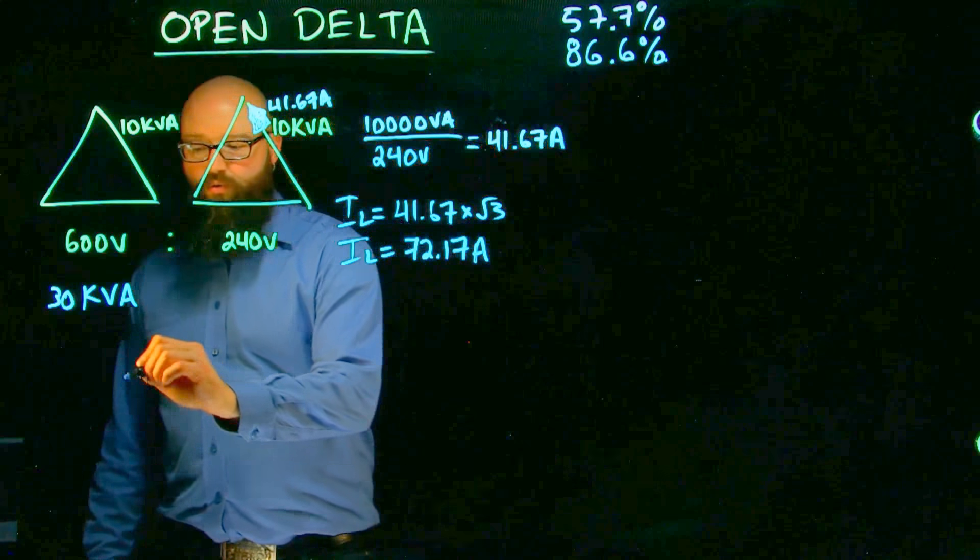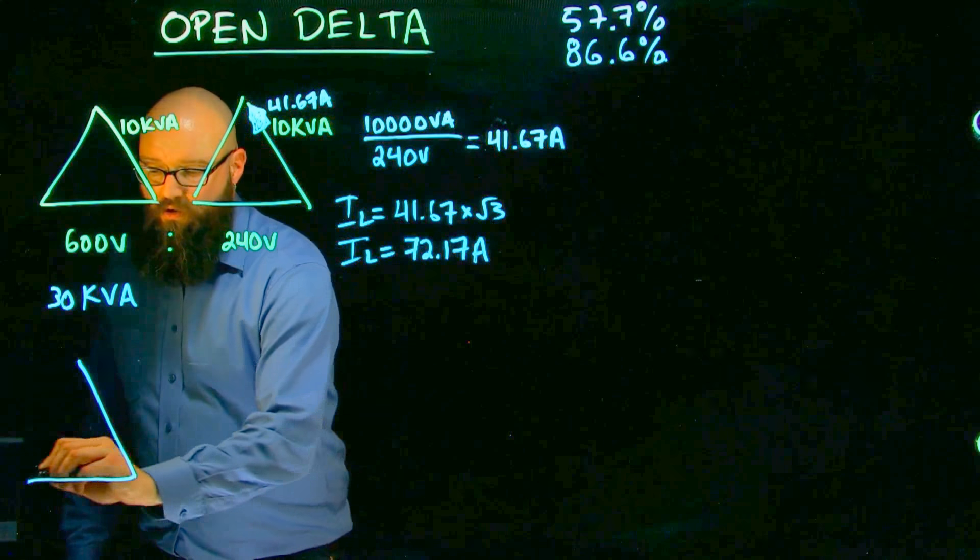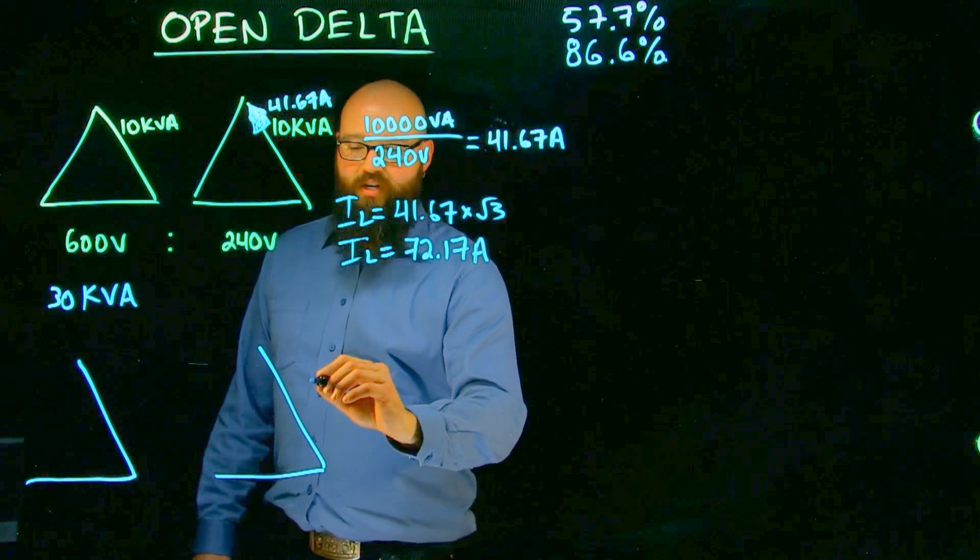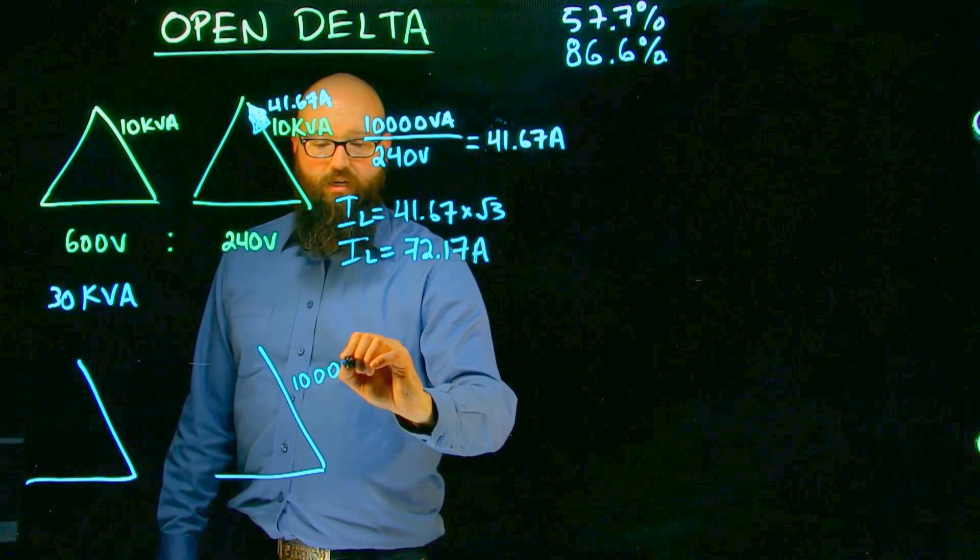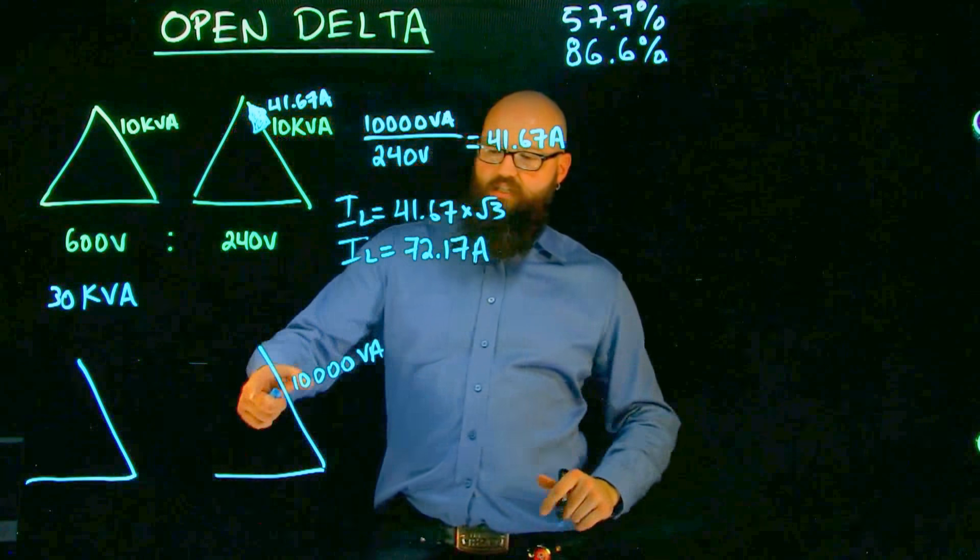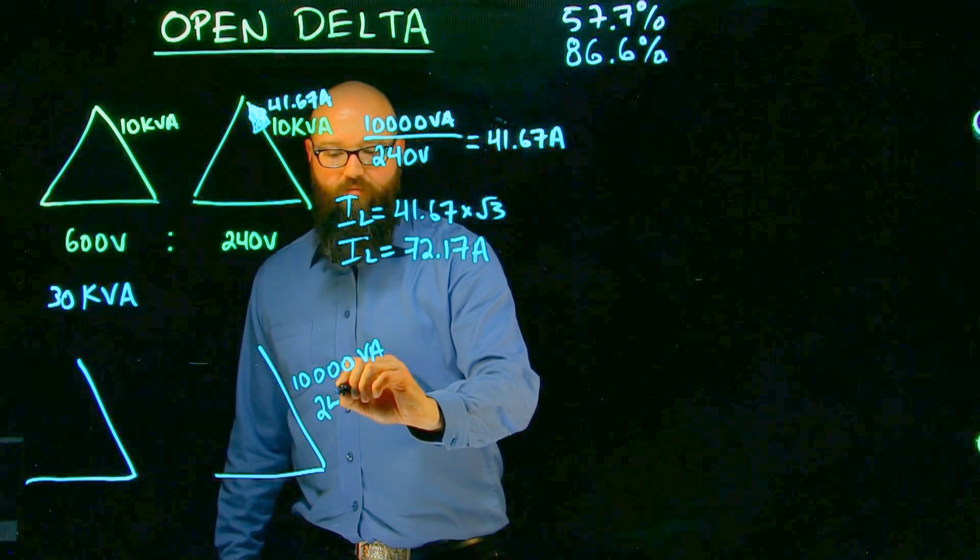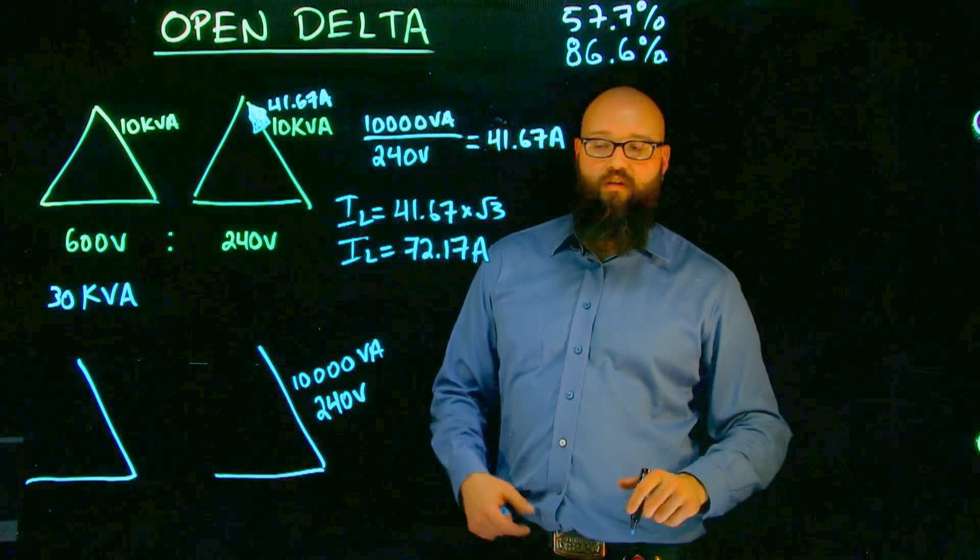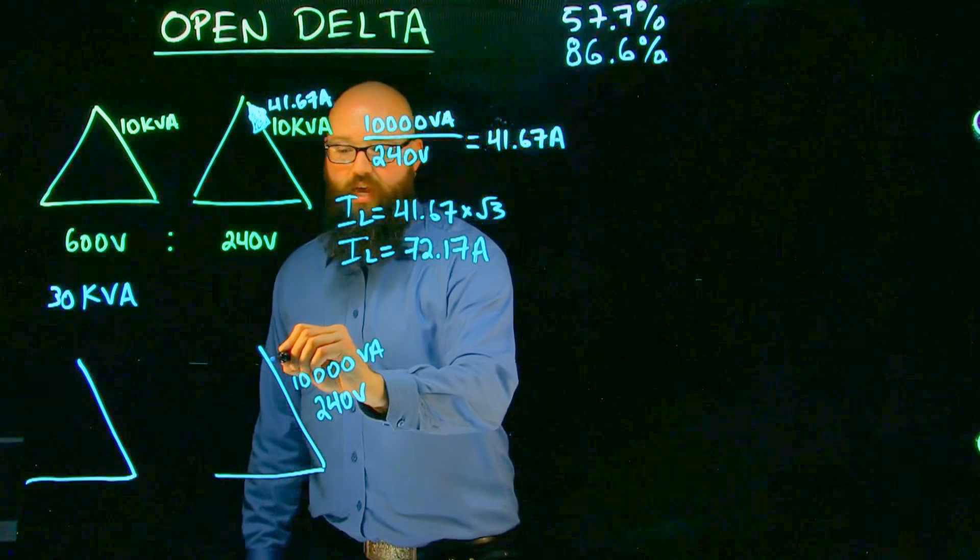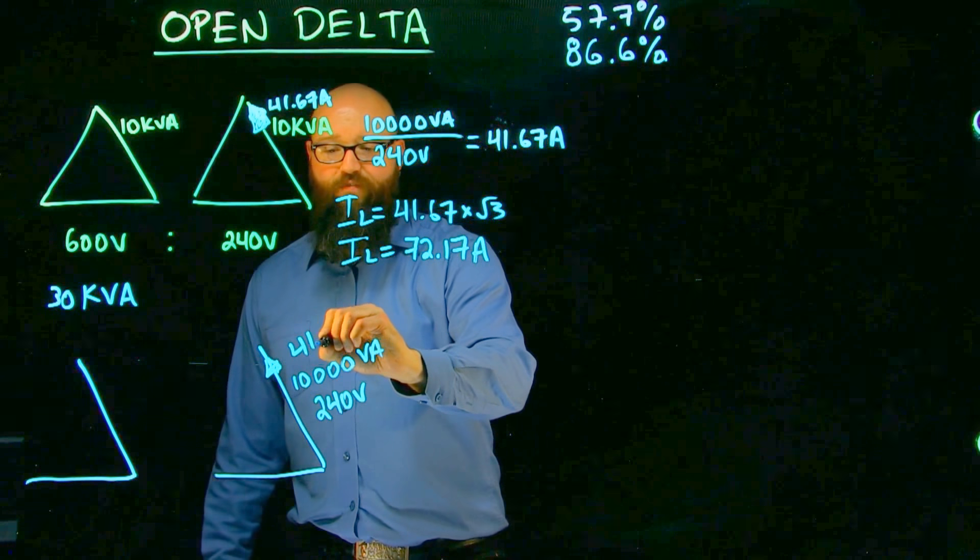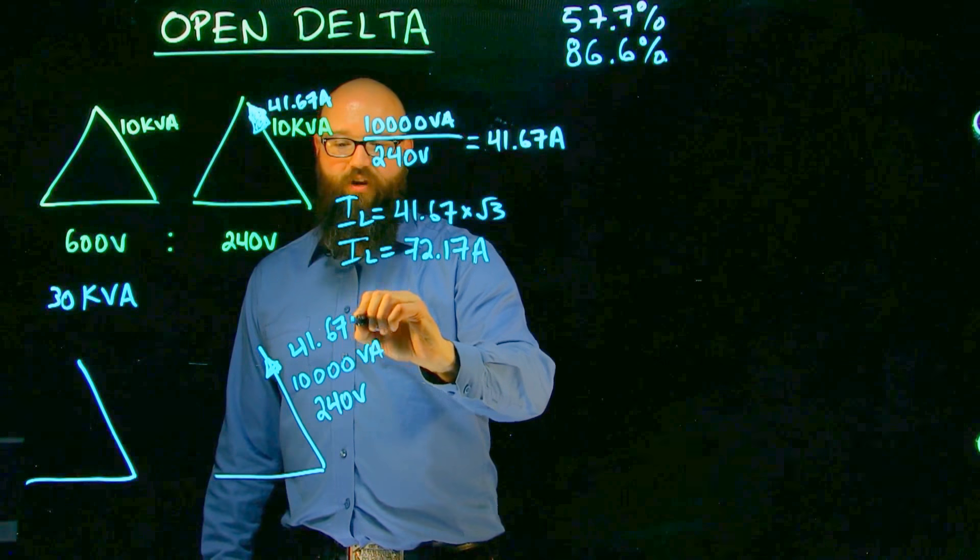However, what happens when we lose one of those windings? Okay, each one of these windings is still rated at 10,000 VA. Okay, and it has still 240 volts induced into the secondary side of it, which still gives us a phase current, if we do the same calculation, of 41.67 amps.